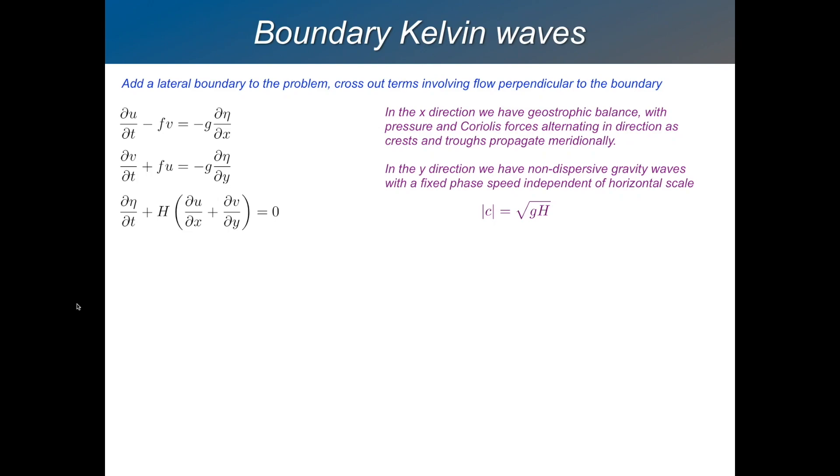So what we're going to do now is add a lateral boundary to the problem. We'll put a wall here on the western side of an ocean basin. In the x direction we have geostrophic balance. And there's no flow through that wall. So we set u equal to 0.